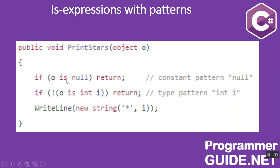We often refer to out variables and pattern variables jointly as expression variables. In this example, if o is null it returns from the function — here the constant pattern null is used. In the second statement, it checks if o is not an integer type, then it returns. Otherwise, it stores the value of o into i, and in the third statement it prints the value of i.